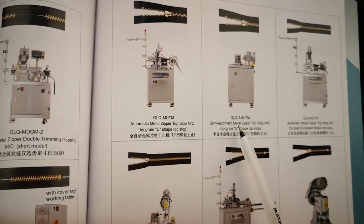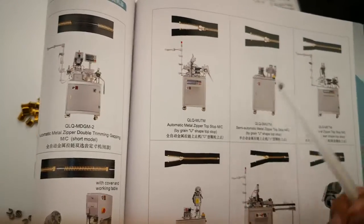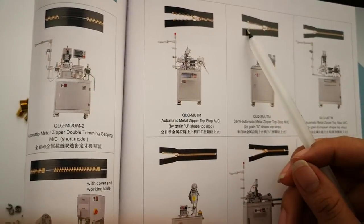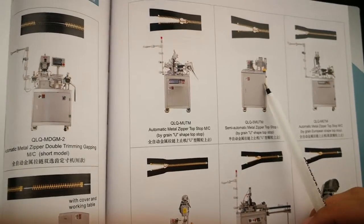If your machine is semi-automatic metal zipper top stock machine, then it doesn't matter. Because first your worker should insert the top stock on the zipper tape, and then with this machine for placing.